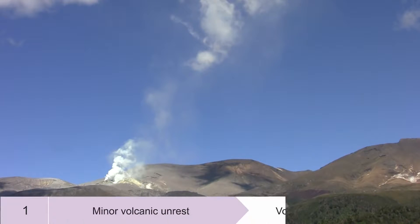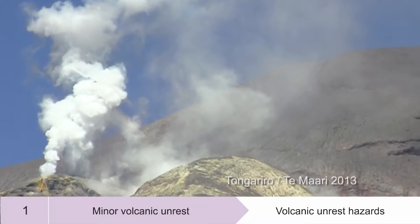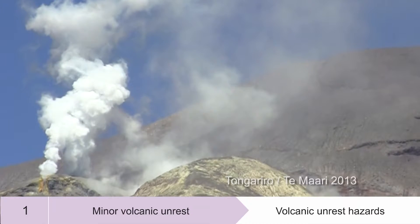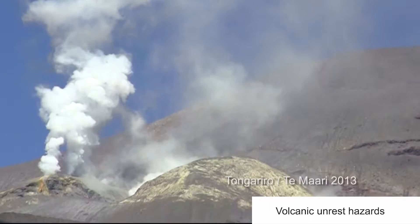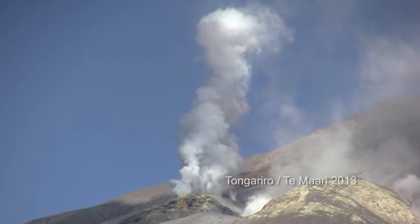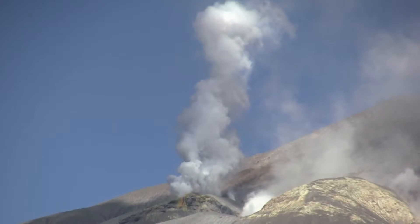A volcano at alert level one is experiencing minor unrest. There may be some volcanic unrest such as geothermal systems, volcanic gases or earthquakes.